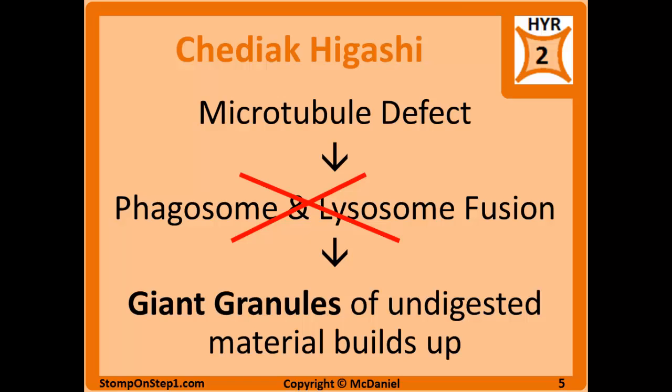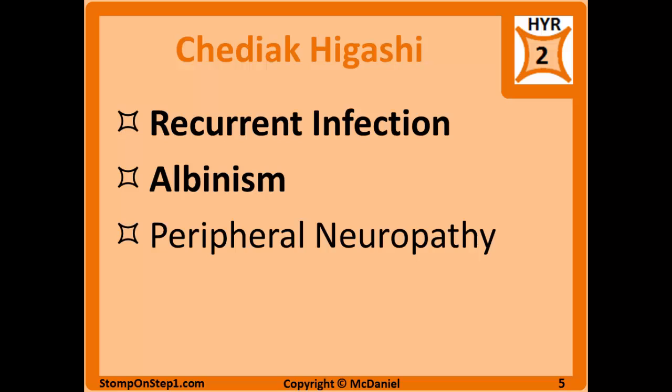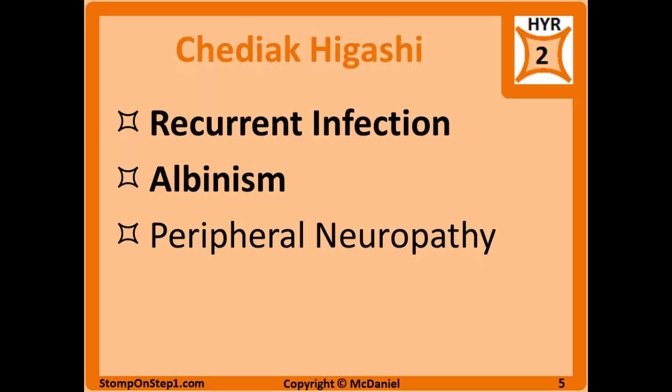You're going to have buildup of giant granules of undigested material in the phagocytes, because the cell is still consuming bacteria and dead cells but never actually getting rid of them. In Chediak-Higashi, you'll have recurrent infections similar to Kartagener's. You'll also have albinism because microtubules help in trafficking melanin between cells, and peripheral neuropathy because microtubules play a key role in axonal trafficking.